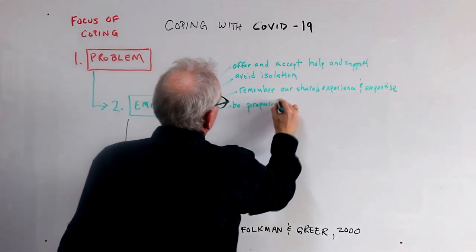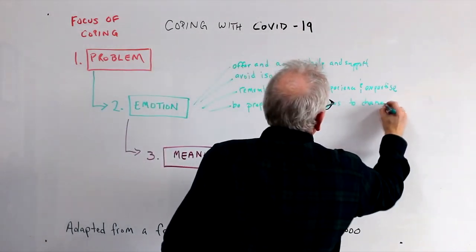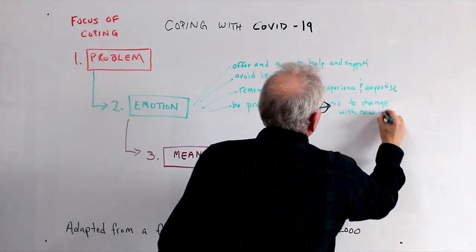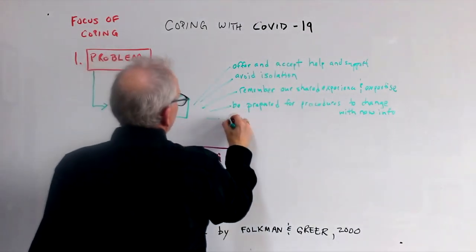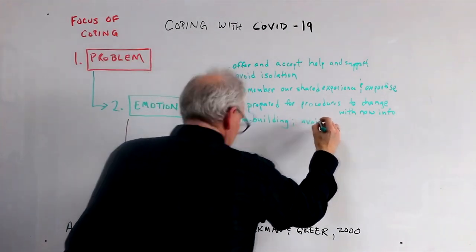It also helps to know in advance that things are going to change as the situation evolves. New directions need not be a sign of failure. More likely they are the signs of a system adapting exactly as it should to new information.